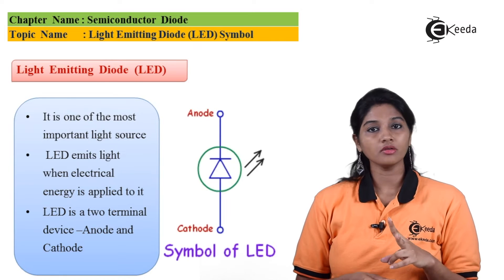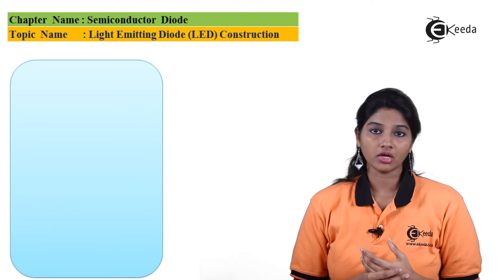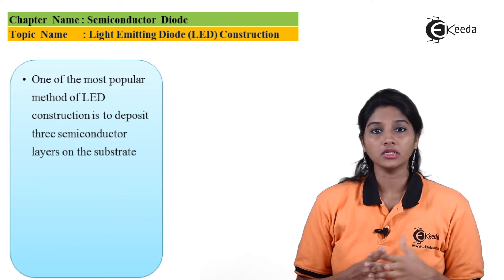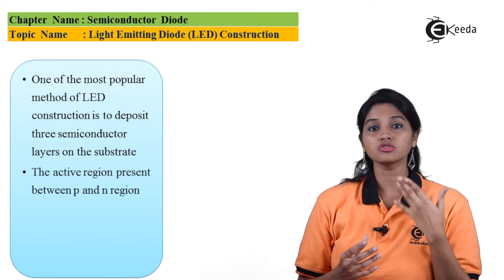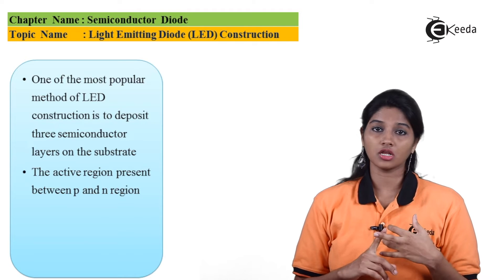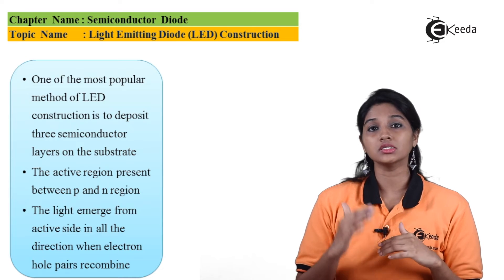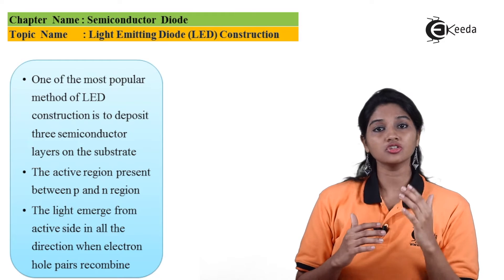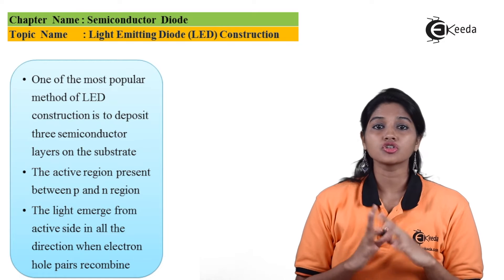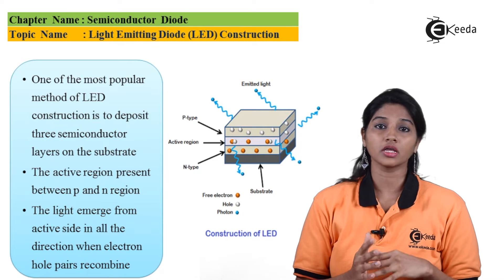LED is a two terminal device — that is anode and cathode. Now moving to the construction of LED. One of the most popular methods for construction of LED is to deposit three layers on the substrate. The three layers are the active region, p region, and n region. The active region is always sandwiched between the p region and n region. Light emerges from all directions of the active region whenever recombination of electrons and holes takes place.